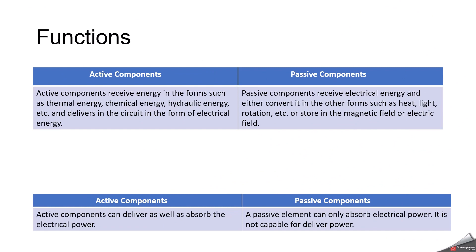Next, in terms of functions, an active component will receive energy in the form of thermal, chemical, and hydraulic energy and convert it into electric energy, which is then dissipated in the circuit. Whereas a passive component has the capacity to absorb all the electric energy and convert it in the form of heat, light, or rotation, or even store it in the form of a magnetic field or electric field. For example, if we take a fan as a circuit, the power will be dissipated and the fan will store the electric power and rotate. This complete circuit defines the function of active and passive components.